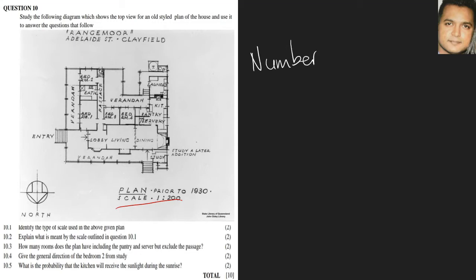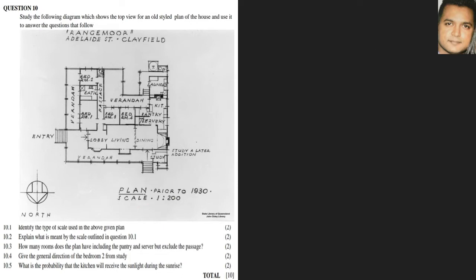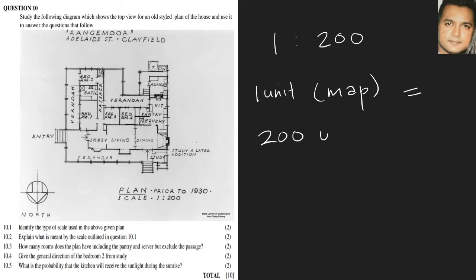Another name for a number scale is the ratio scale. The reason it's called a ratio scale is because there are two dots, so it's written in the form of a ratio. If it says 1 to 200, that means one unit on the map is equal to 200 units on the ground.